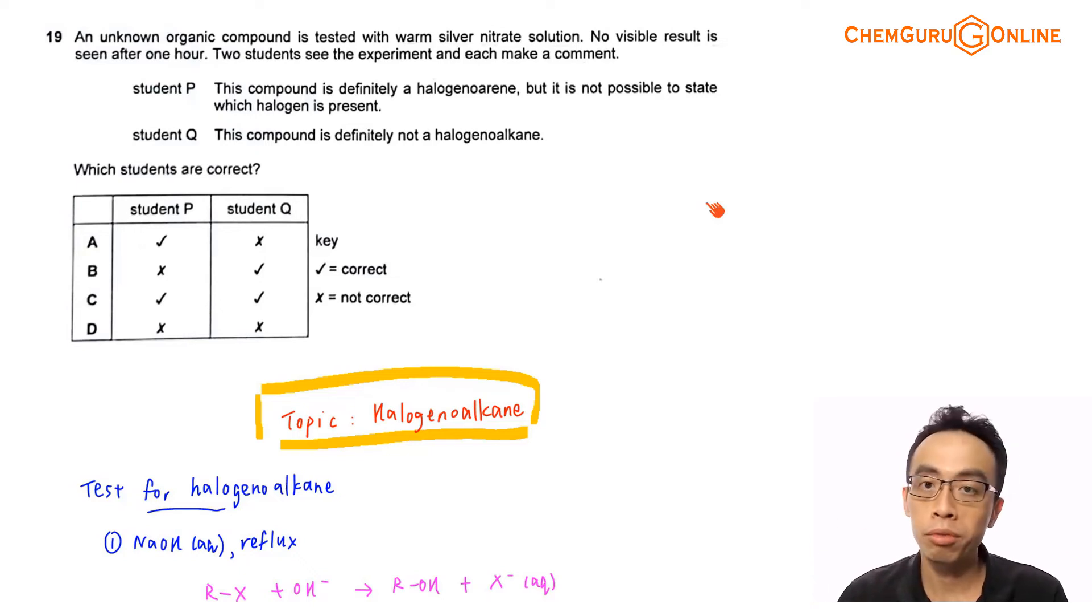Hi everyone, this is Maverick Poirot, the chemistry guru. Now in this video, we want to discuss the suggested solution for 2021 A-levels H2 chemistry, paper 1, question 19.